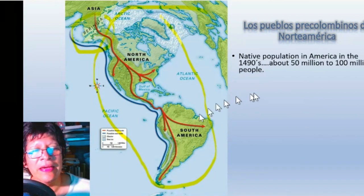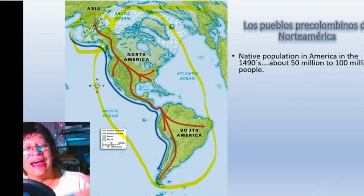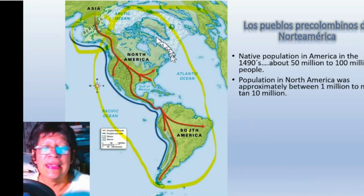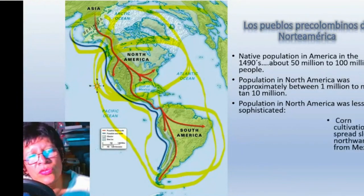It is believed that in the whole continent when Europeans came there were between 50 and 100 million people — that is a lot of people. In North America specifically, it is believed there were between 1 million and 10 million people. But 90 percent died when Europeans came because of the diseases that were spread by the Europeans.